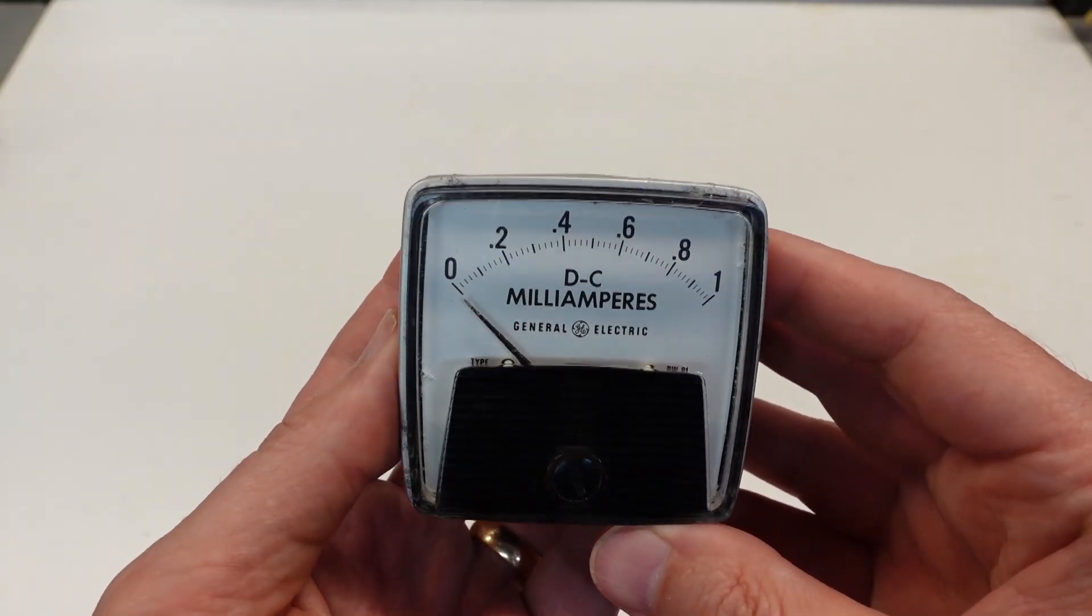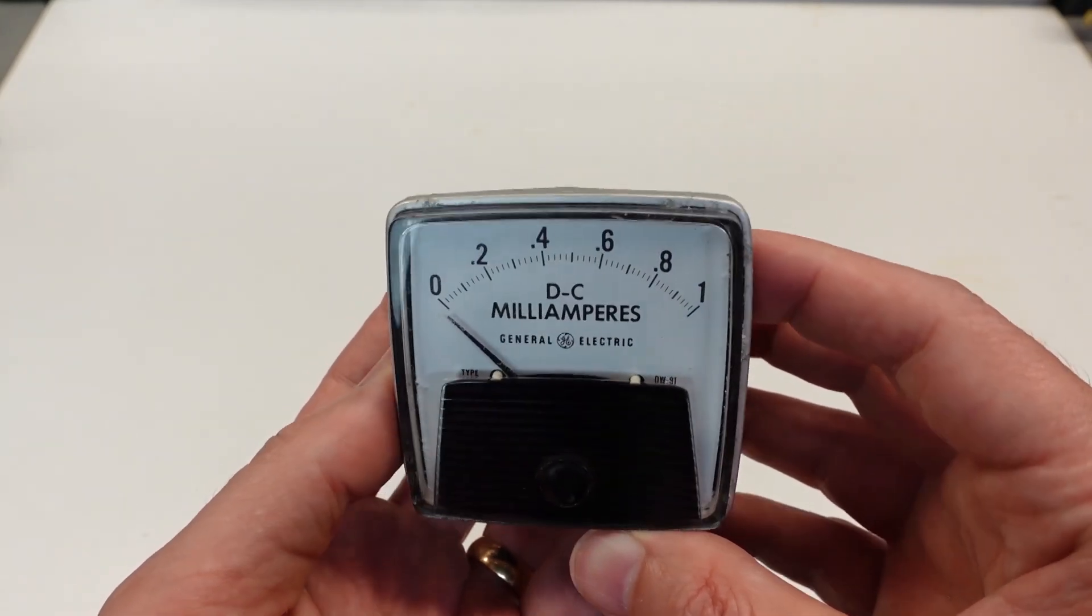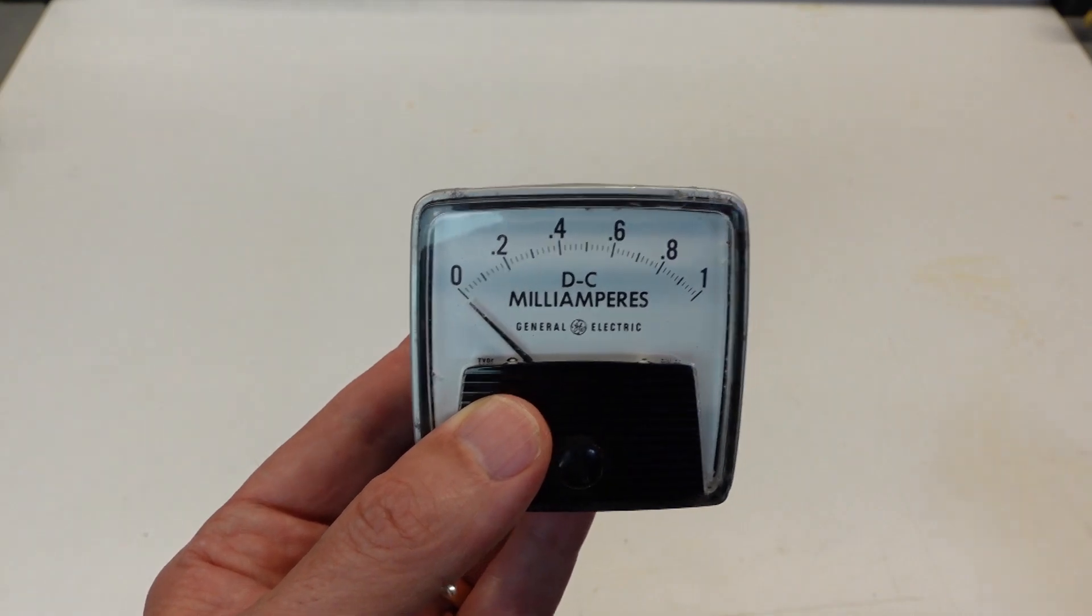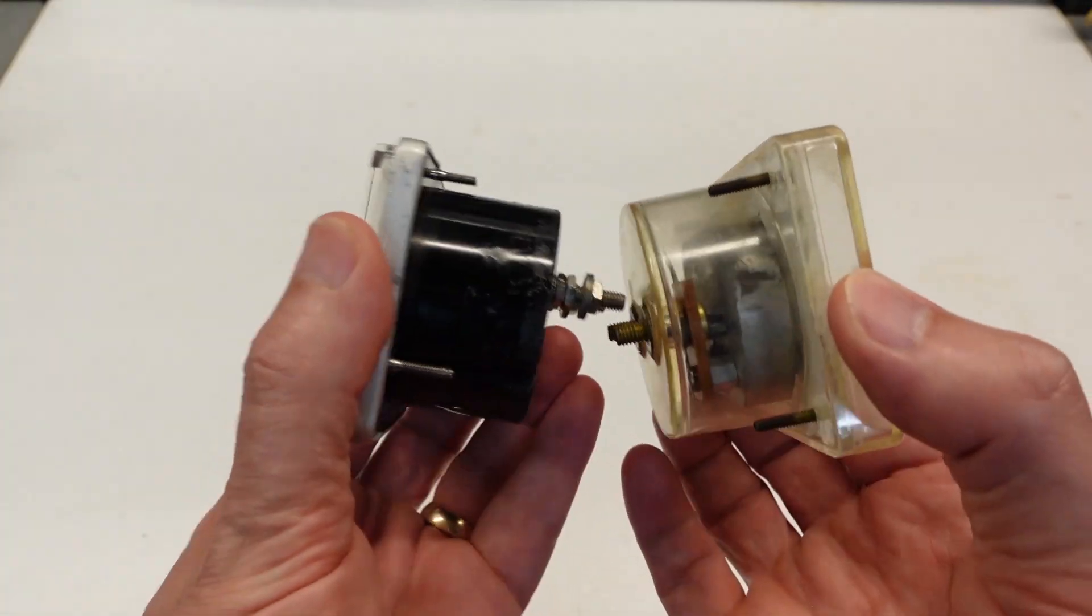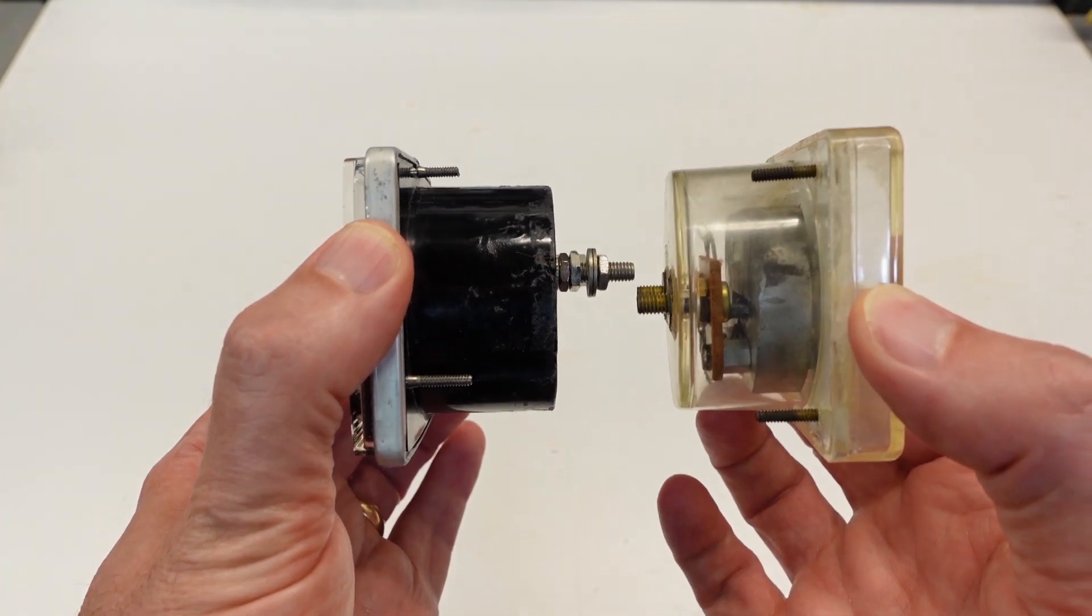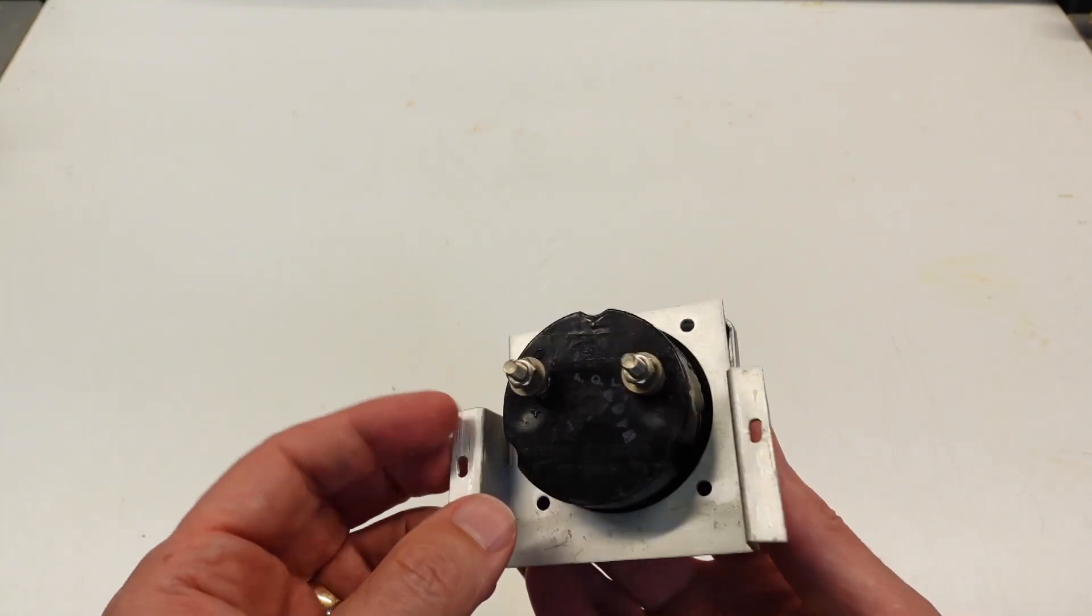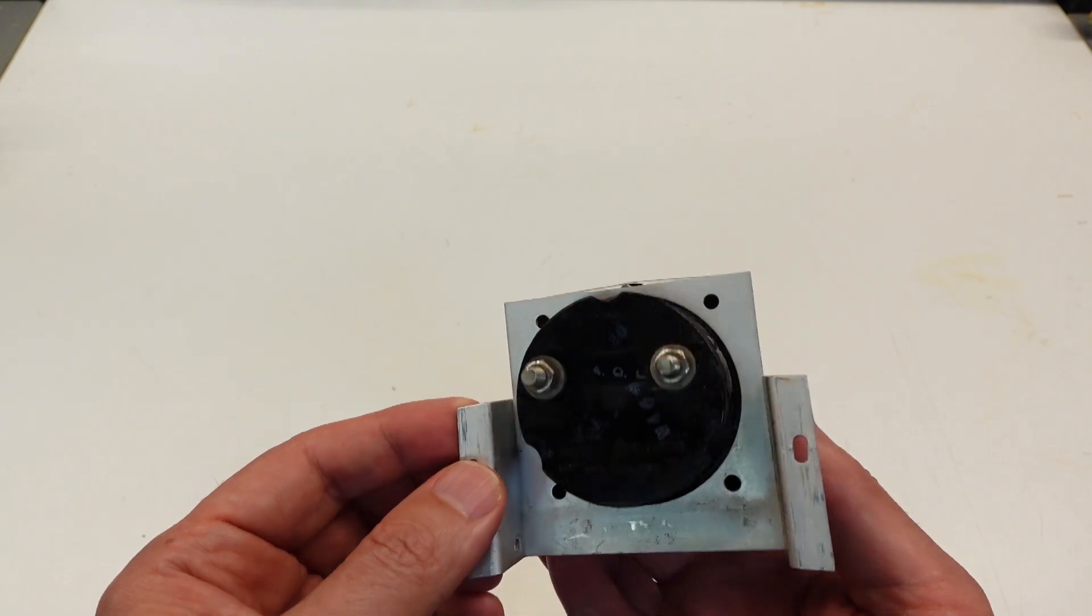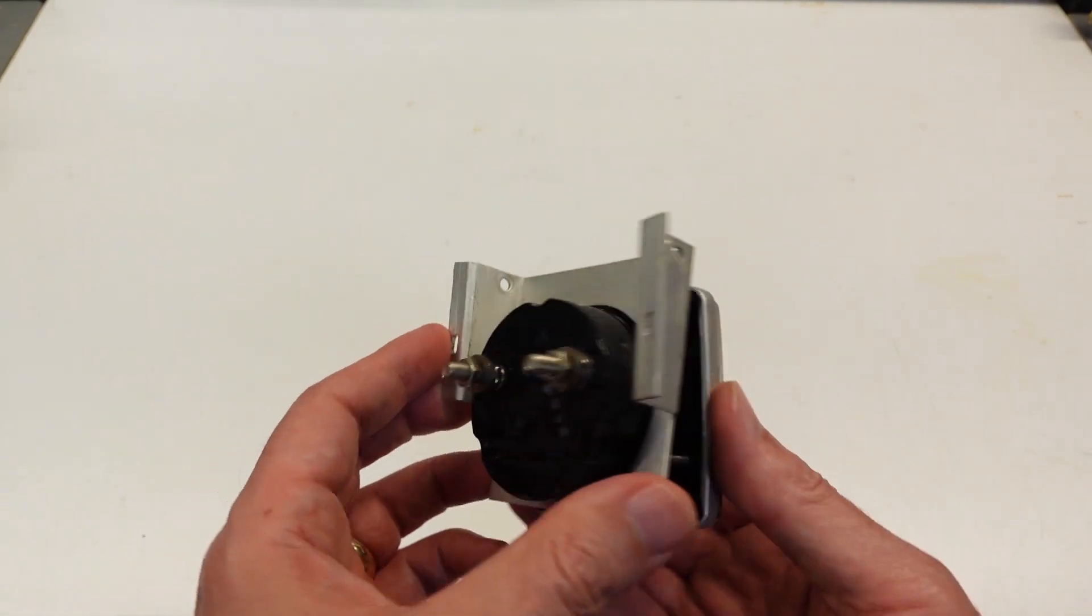Plan B Part 2. How about this GE meter? It's another eBay find. It's also 1 milliamp full scale and it's pretty much the same size as the existing meter. The body diameter is the same size, which is really important because that needs to fit through the hole in the mounting bracket. The mounting bolts don't align though. It has three of them spaced in a different pattern, but that should be an easy fix.